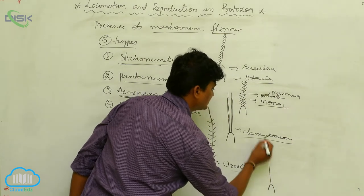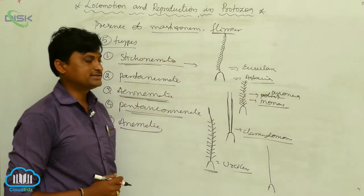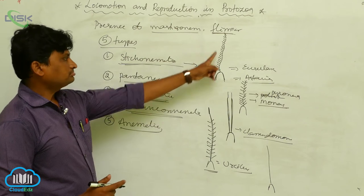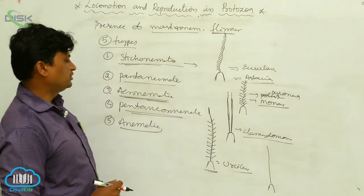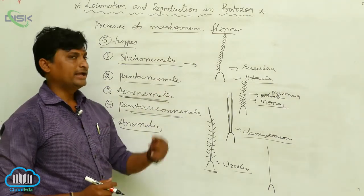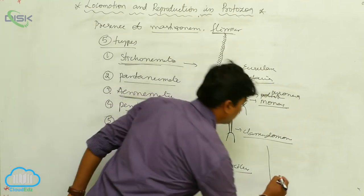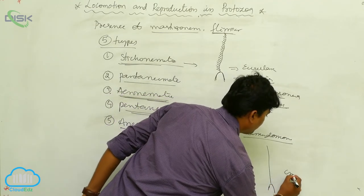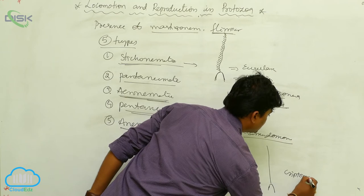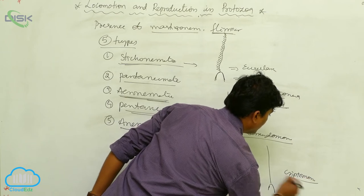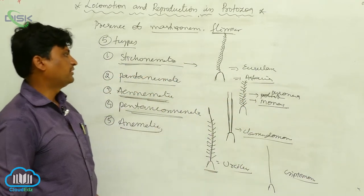Animatic: the flagellum is negated — there are no flimmers and mastogonyms present. This type is called animatic. The example is Cryptomonas.